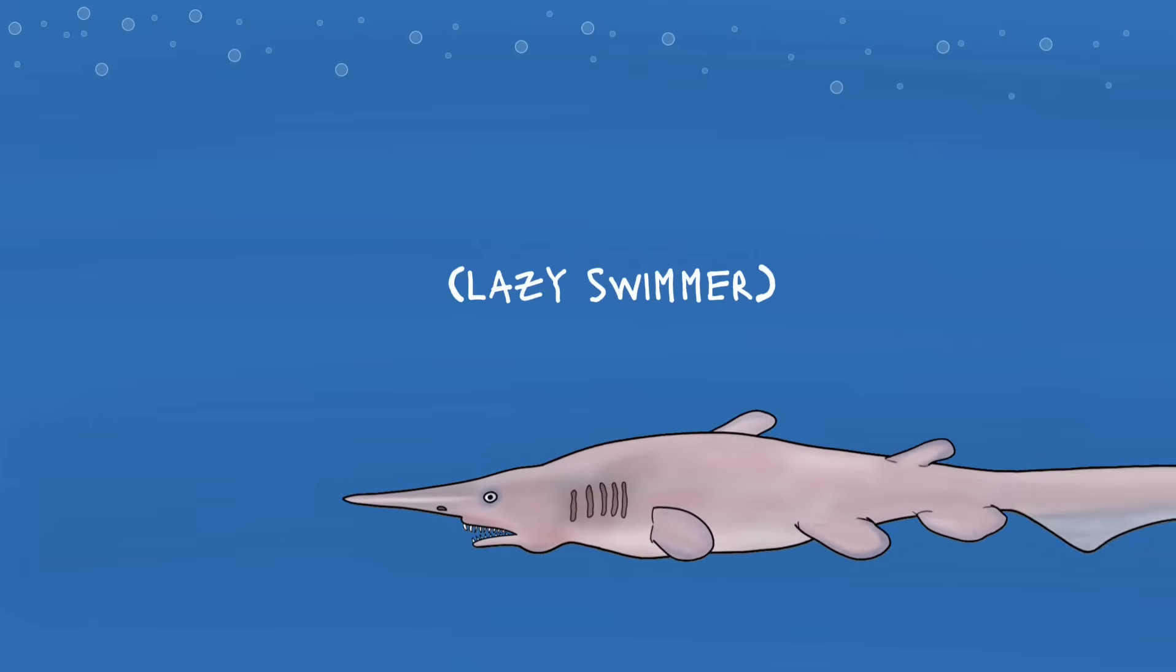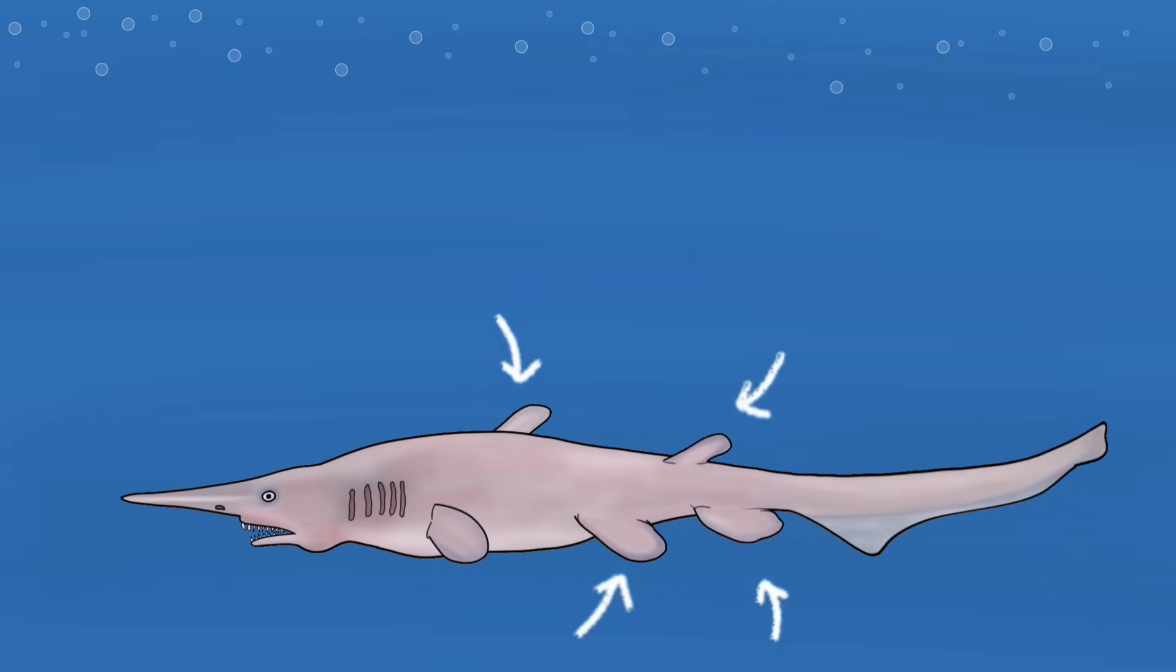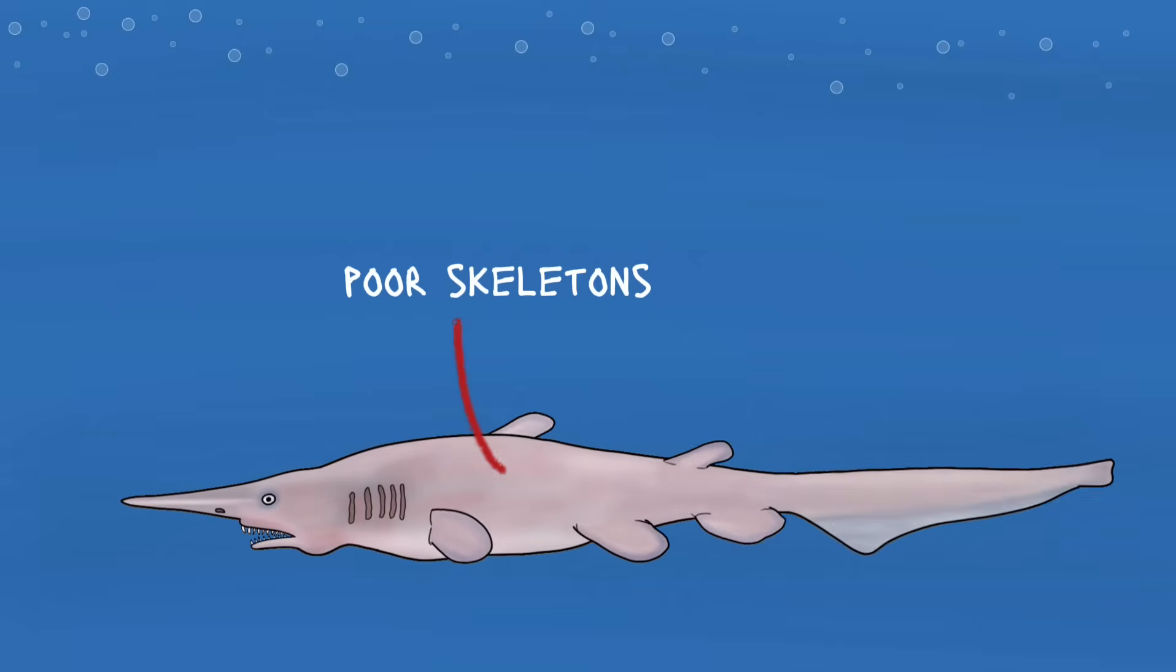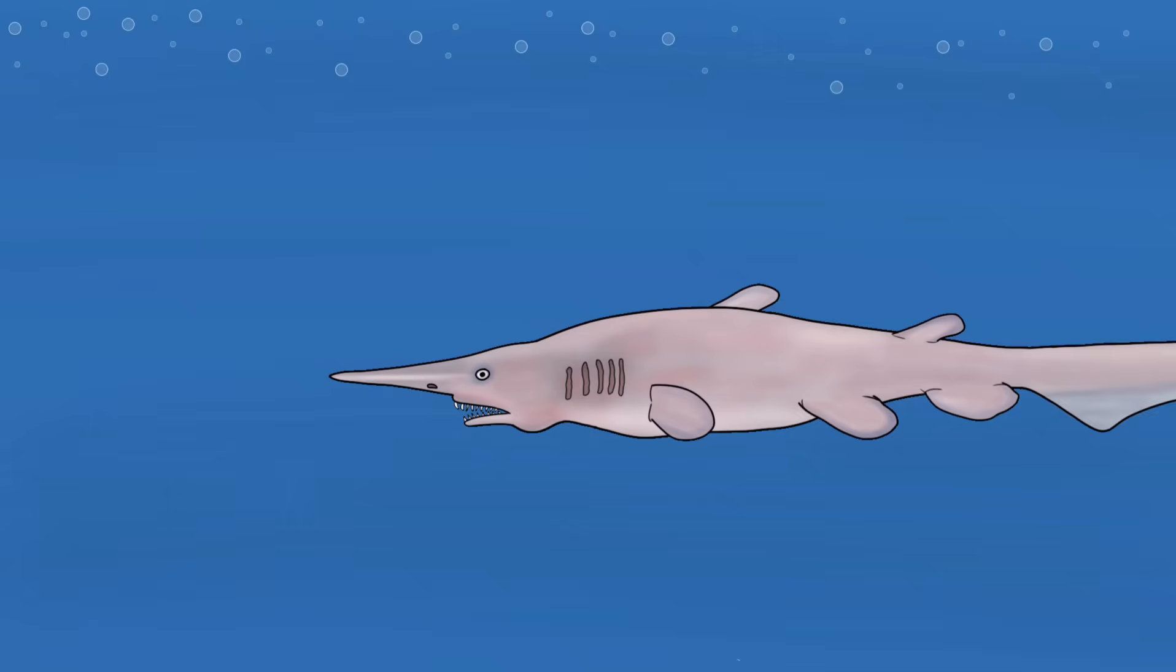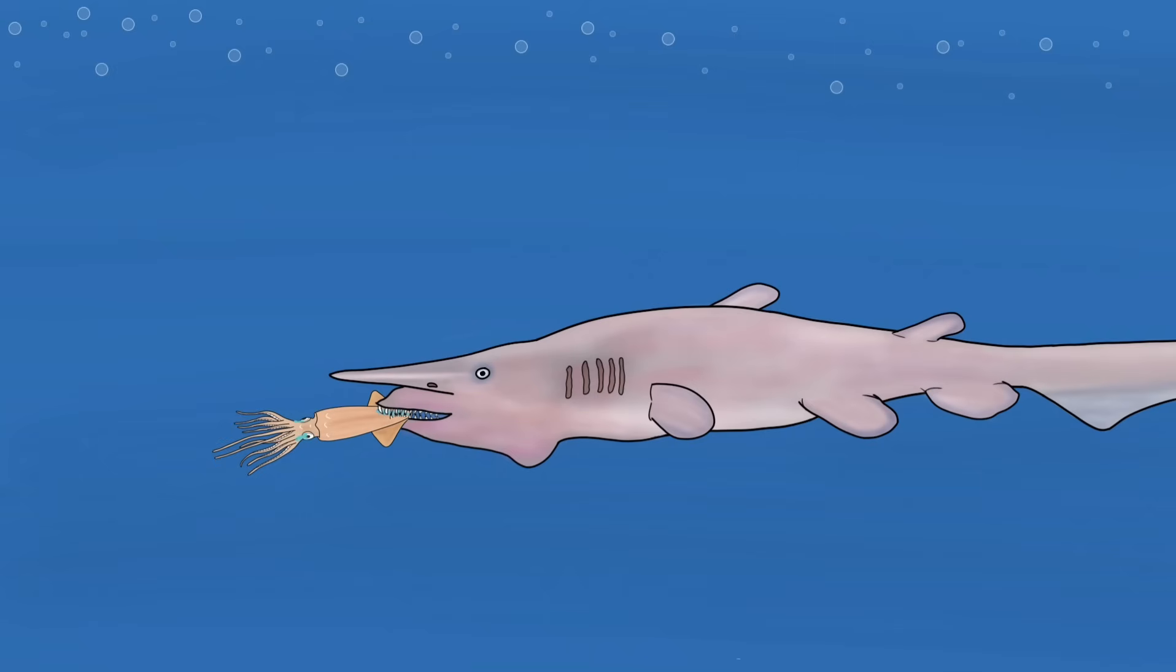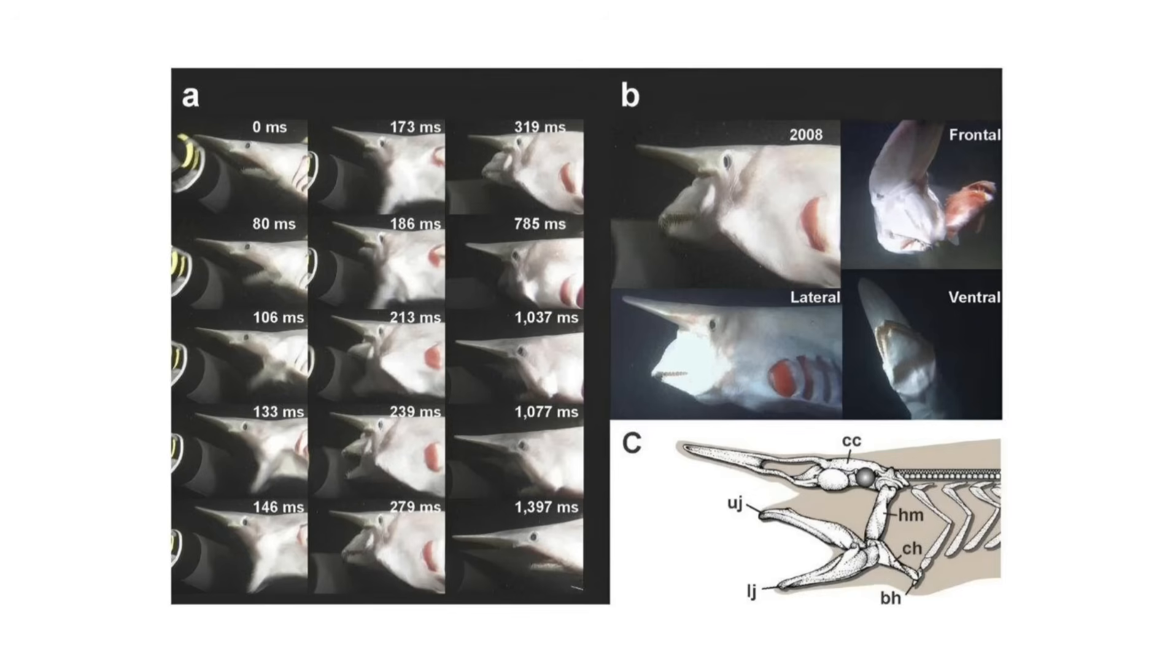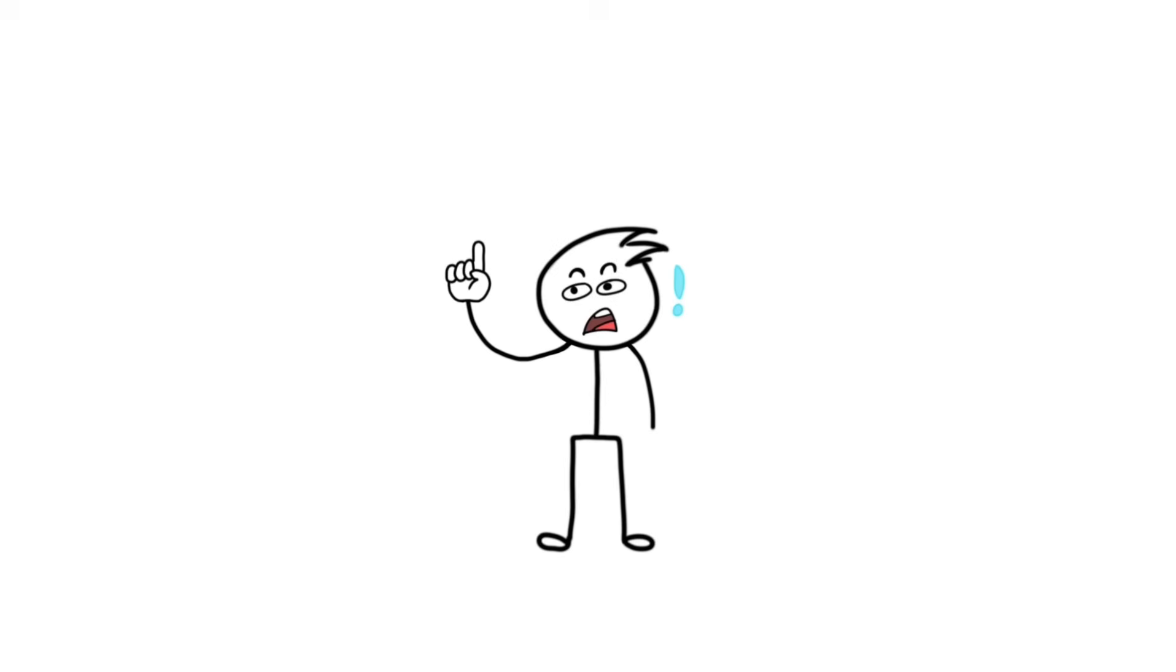Goblin sharks are very lazy swimmers. They have very small fins and poorly calcified skeletons. So, most of the time, they just hover and wait for the food. When the food is near, they throw their entire jaw to catch that prey. It's so fast that it's the fastest jaw movement in entire ocean.